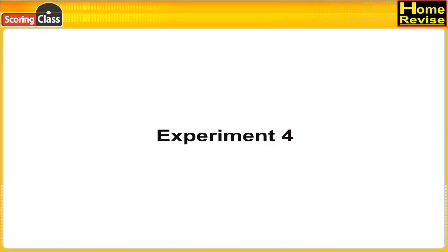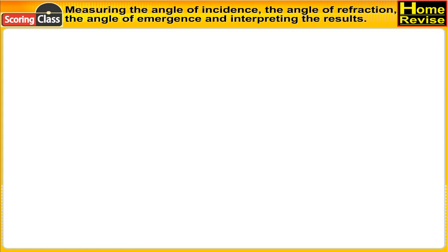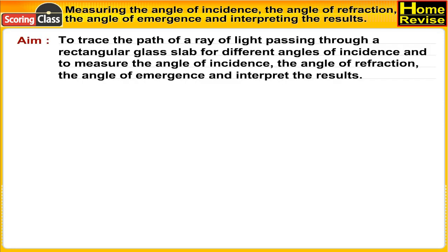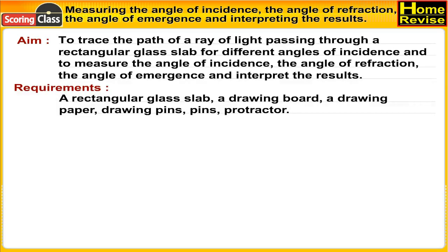Experiment for measuring the angle of incidence, the angle of refraction, the angle of emergence, and interpreting the results. Aim: to trace the path of a ray of light passing through a rectangular glass slab for different angles of incidence, and to measure the angle of incidence, the angle of refraction, the angle of emergence, and interpret the results.